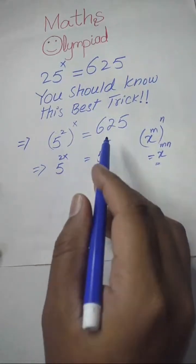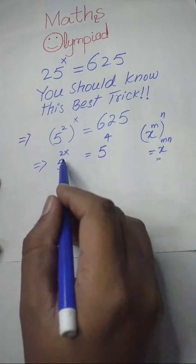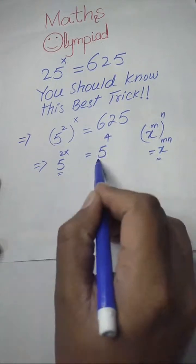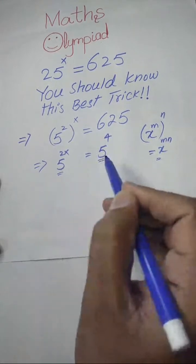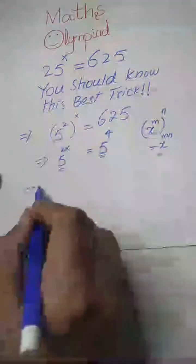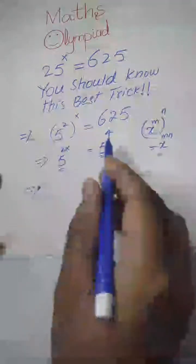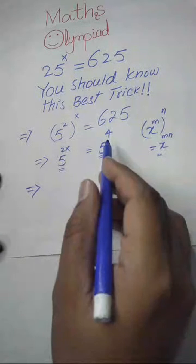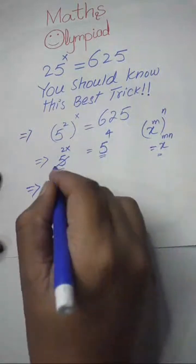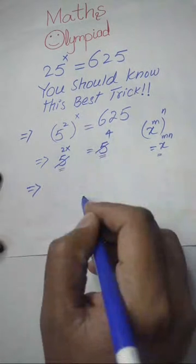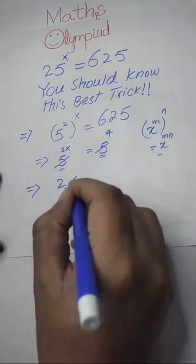Here we can see that the bases of both sides are the same, so their powers are equal to each other. We can say that these bases cancel out each other, and we will write 2x is equal to 4.